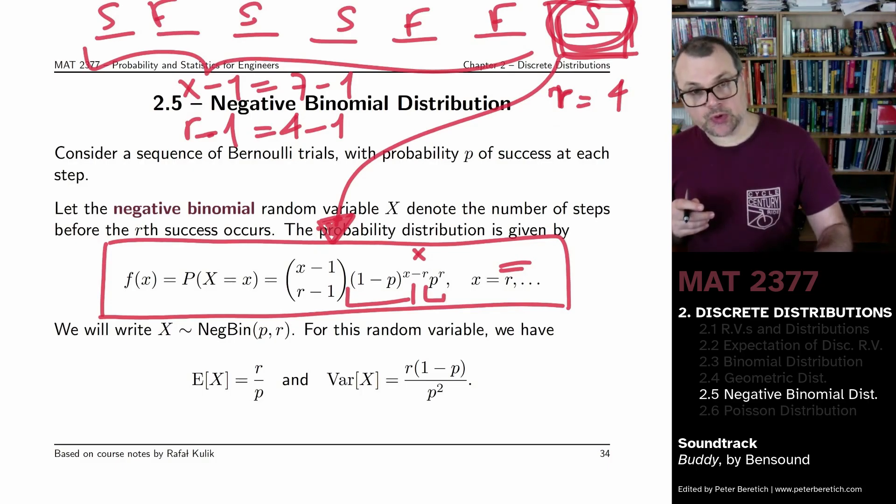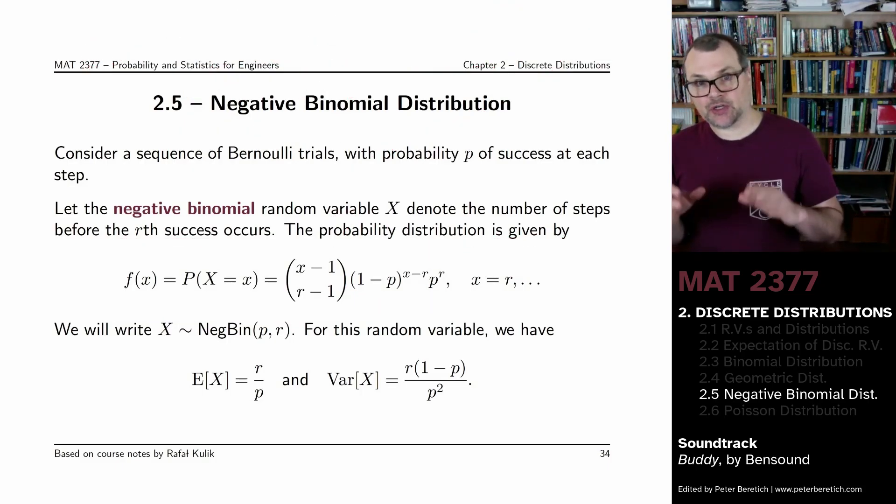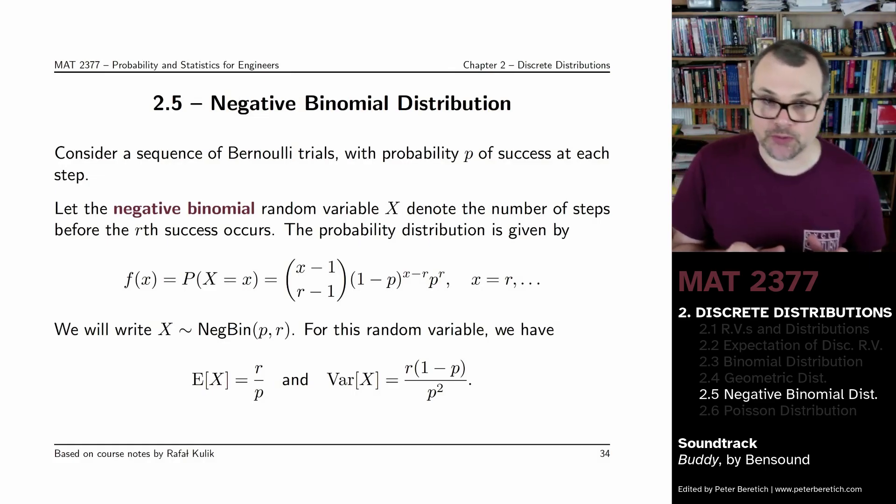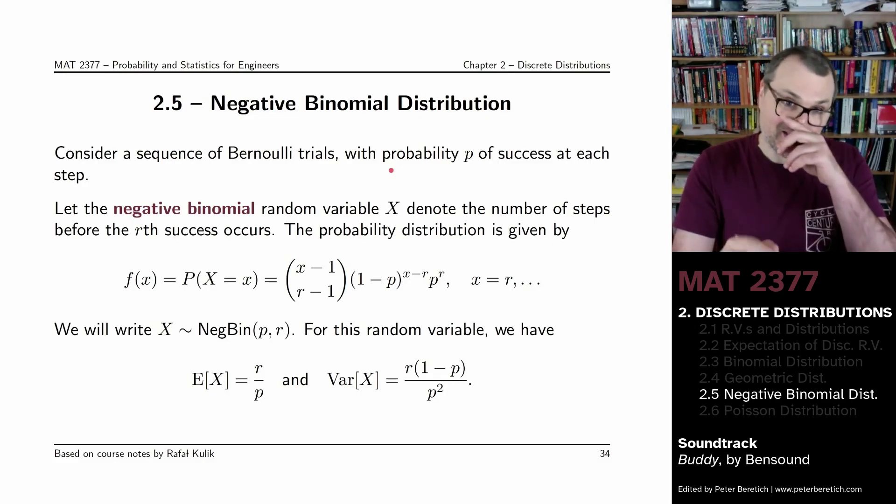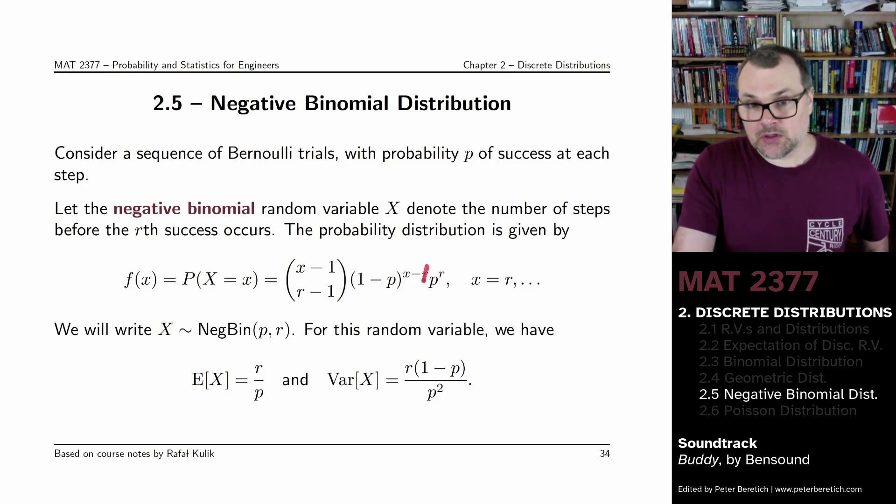So this distribution is a generalization of the geometric distribution, right? If R is equal to 1, if you're looking for 1 success, then this would be X minus 1. This would be 1.